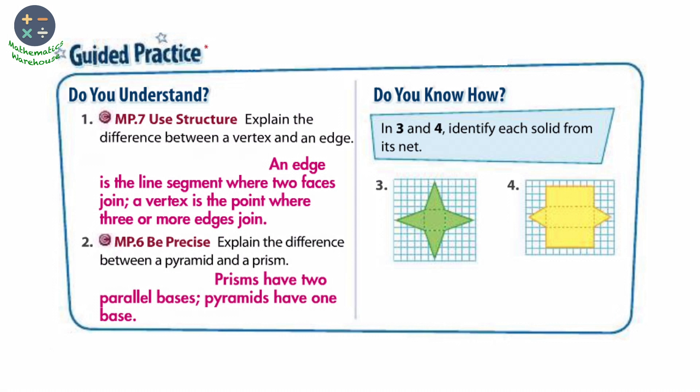In three and four, identify each solid from its net. Here we have at number three, because we have just one base, so we have a pyramid. We name the pyramid according to the shape of its base. So we have a square pyramid. At number four, we have two bases, triangular shape, so we have a prism. Of course, we have a triangular prism.